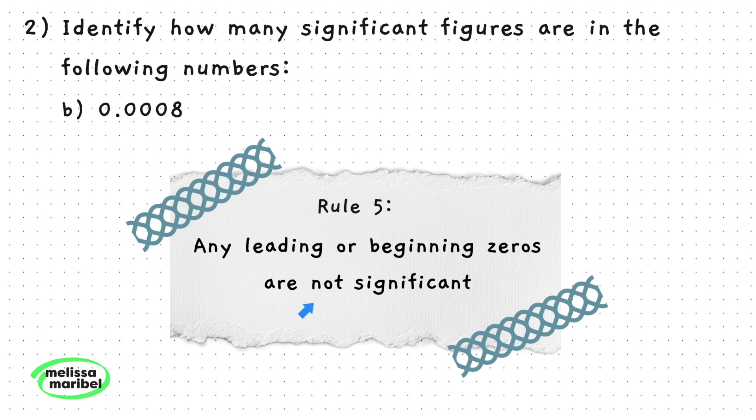Part B follows rule 5, where all leading zeros do not count as sig figs, so we only have one sig fig.